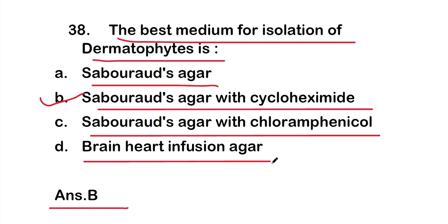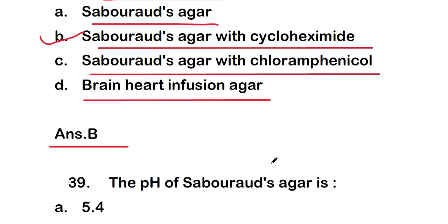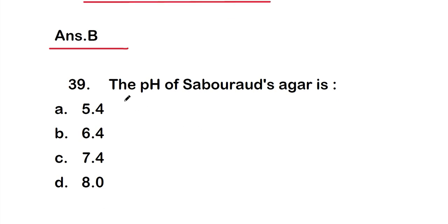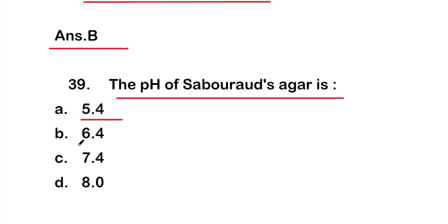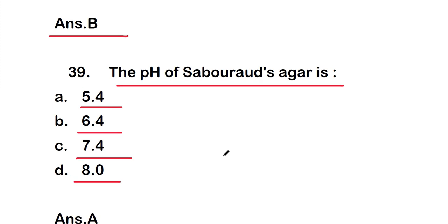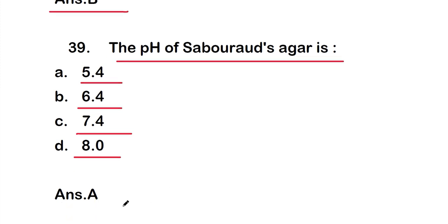Question 39: The pH of Sabouraud's agar is option A - 5.4, option B - 6.4, option C - 7.4, or option D - 8. The right answer is option A, 5.4. The pH of Sabouraud's agar is 5.4.